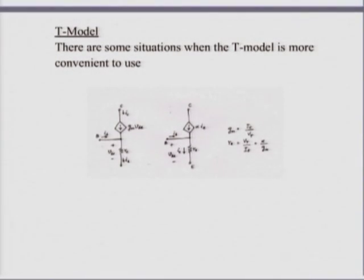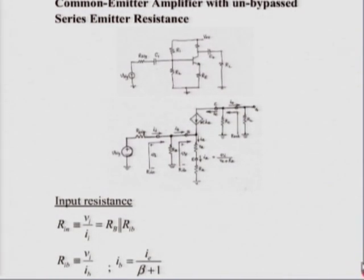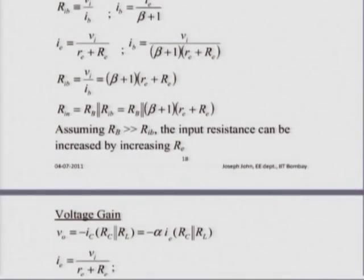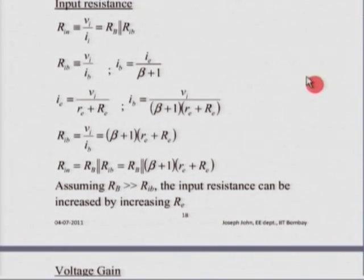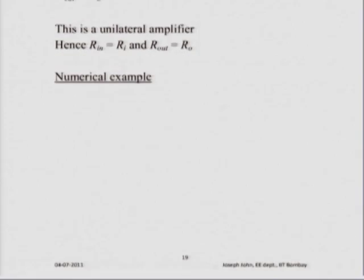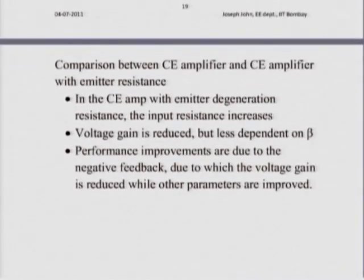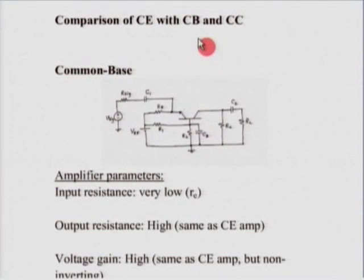We talked about the T-model, which is useful when there is a resistance in the emitter, giving an easier way to analyze the circuit. In a common emitter amplifier with a series emitter resistance, the input resistance was much higher but the voltage gain was very low. The output resistance was the same. Both common emitter amplifiers were unilateral — variations in the load resistance do not change the input resistance, and variations in the signal source resistance do not change the output resistance.